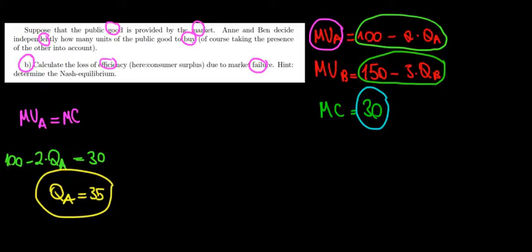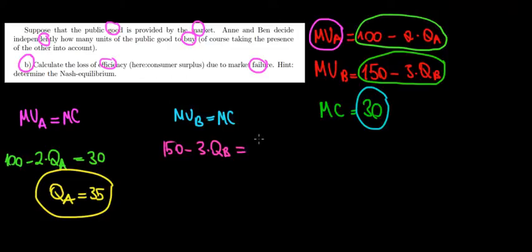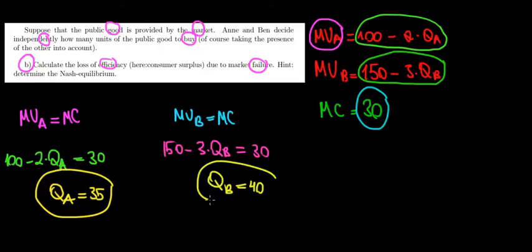We replicate this method for Ben. His marginal utility equals his marginal cost: 150 minus 3 times Q_Ben equals 30. So 150 minus 30 is 120, and 120 divided by 3 is 40. The quantity that Ben would produce independently is 40 units.